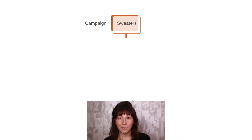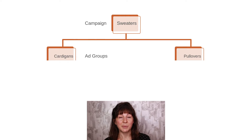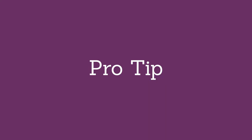An example of this would be if you are a clothing retailer — you could have a campaign for sweaters, and ad groups for cardigans and pullovers, and then keywords within each of those ad groups relating to those specific products. Pro tip: break out your individual campaigns by geography, audience, or other categories for better budget allocation.